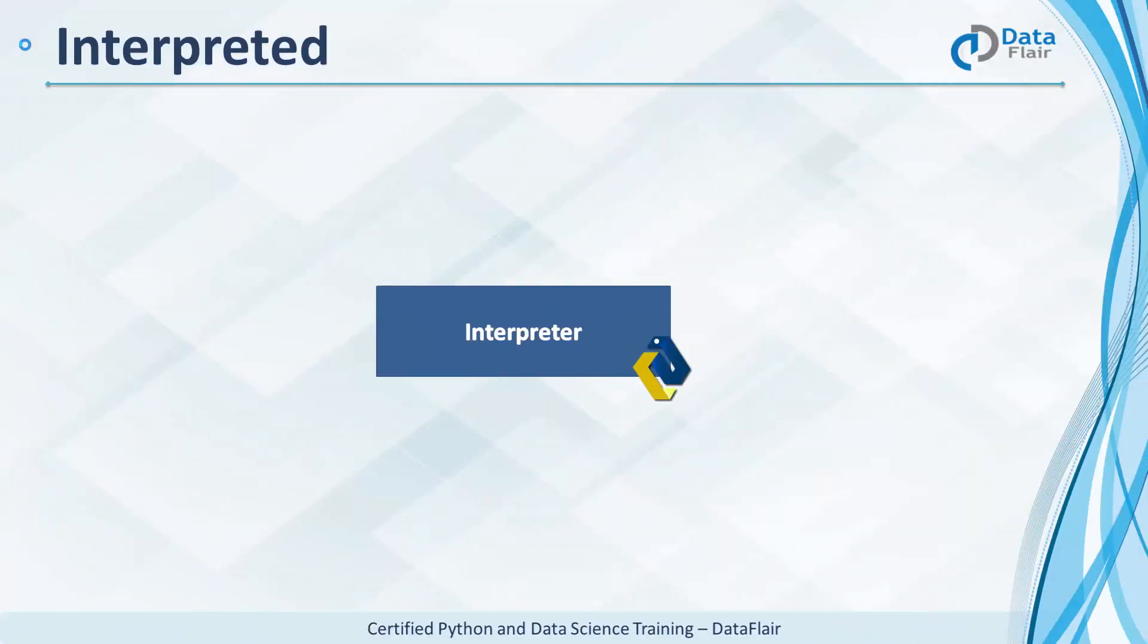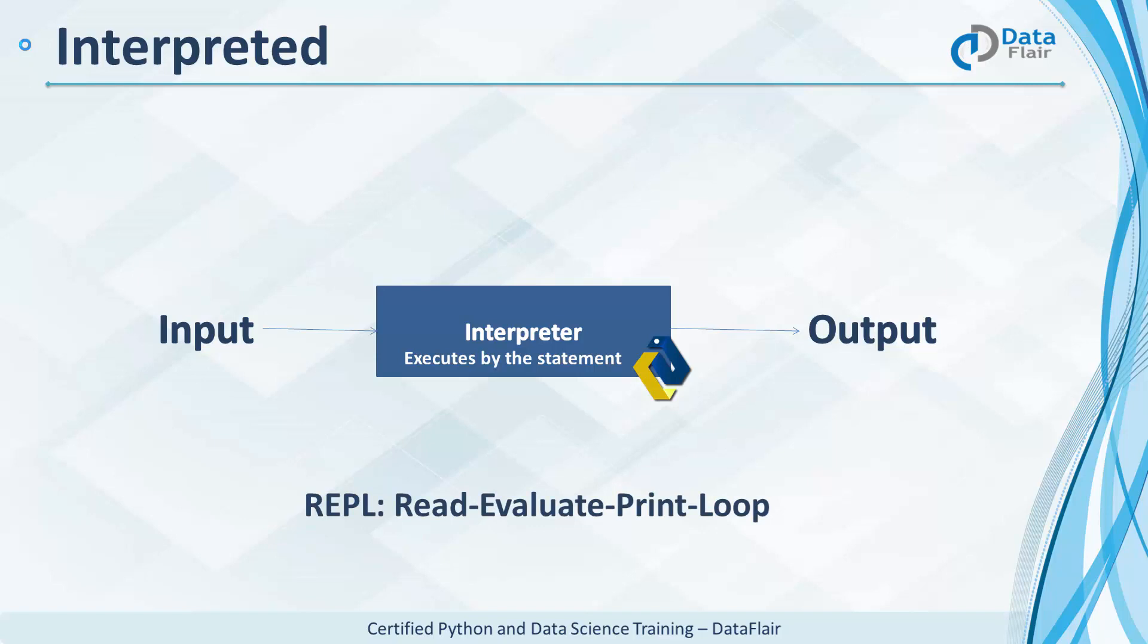Python is an interpreted language. The Python interpreter takes an input and gives out output. It executes one statement at a time. This makes it easy to debug, making it convenient for beginners. Internally, your Python source code is converted into bytecode. We'll have more on this later. It is very good for scripting and the interpreter follows REPL which is read, evaluate, print, loop.